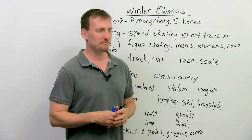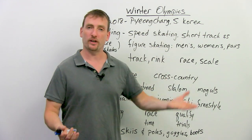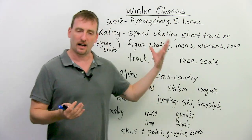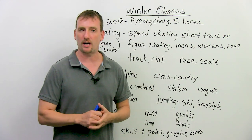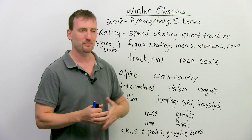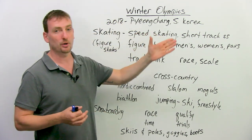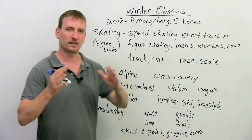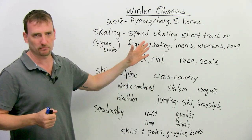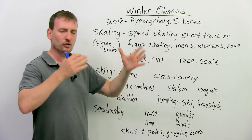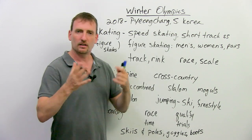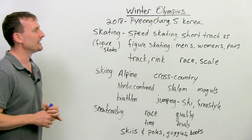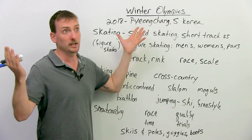Hi. Welcome to www.engvid.com. I'm Adam. In today's lesson, we're going to talk about the Winter Olympics. They're just around the corner, and I figured it's a good idea that you know what's going on if you're interested in winter sports. I'm going to tell you about the different events you can watch and what the different words are that they're talking about on TV. The Olympics are in PyeongChang, South Korea — which is the northern part of South Korea, but not North Korea. We're going to start with the events and then I'll give you some general Olympics vocabulary.